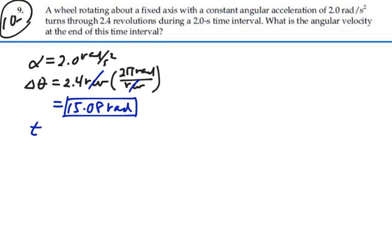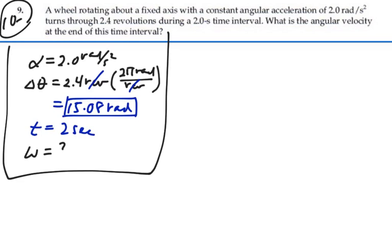And we're going to do all this in 2 seconds. And we want to know what is the final angular velocity. So there's our 4 rotational kinematic variables involved in this problem. And looking for the equation that has those 4, it's actually our last rotational kinematic equation.